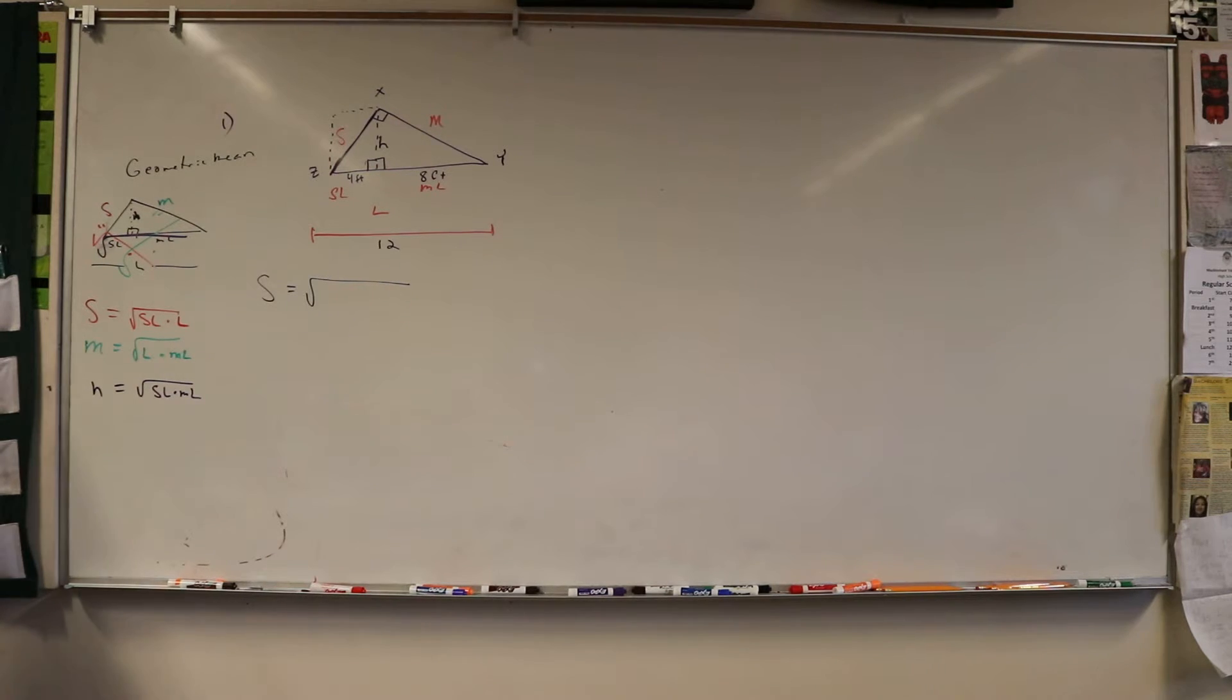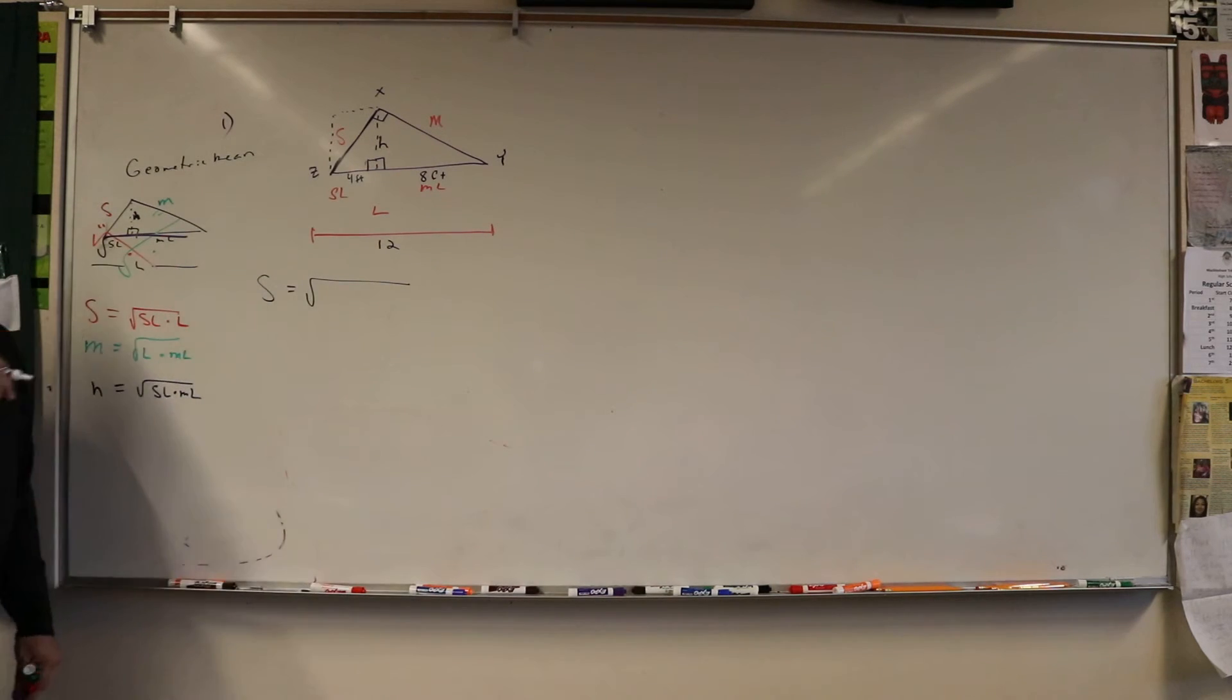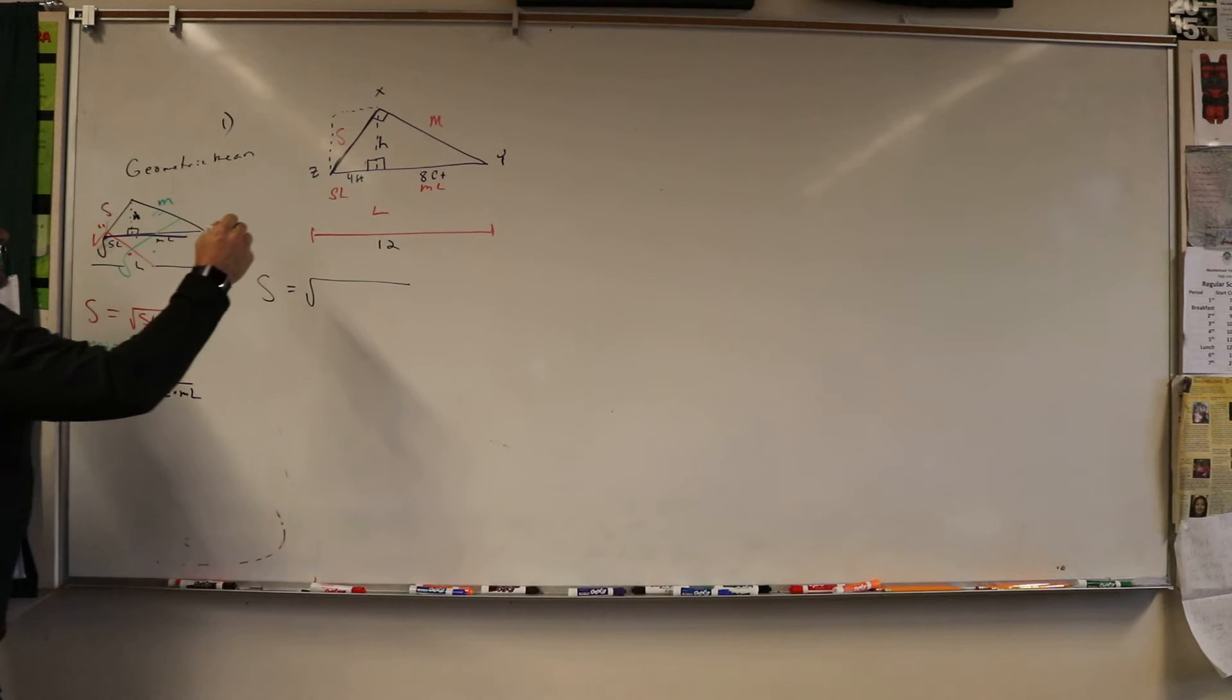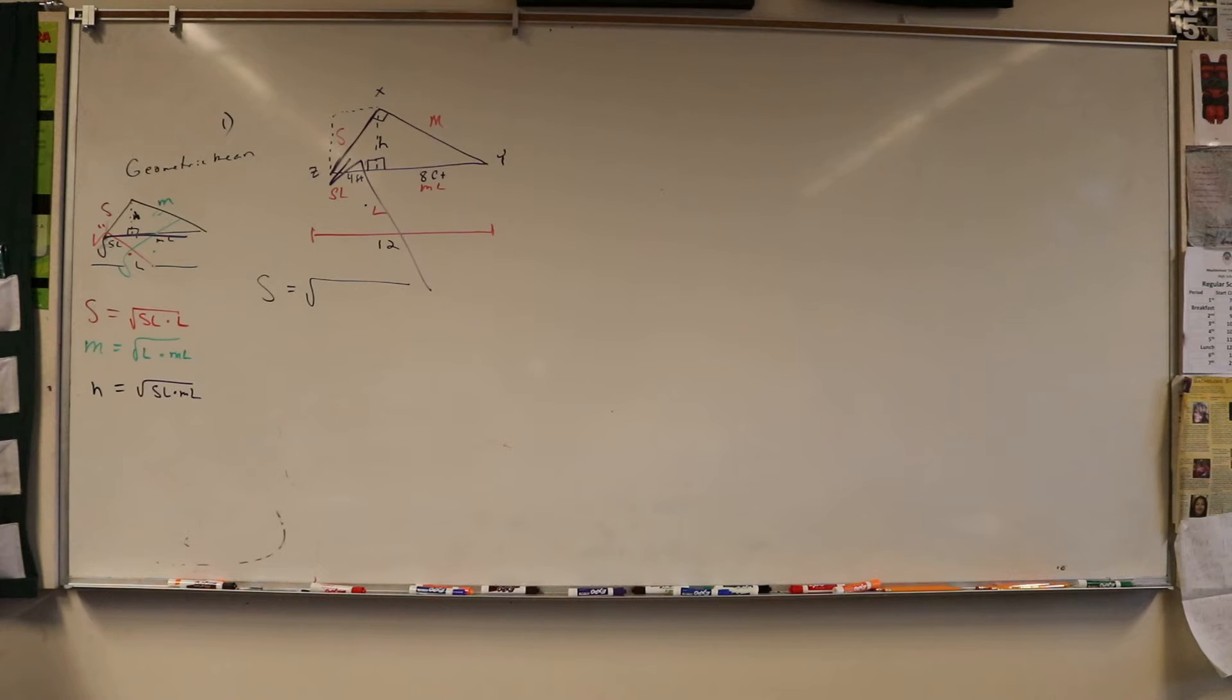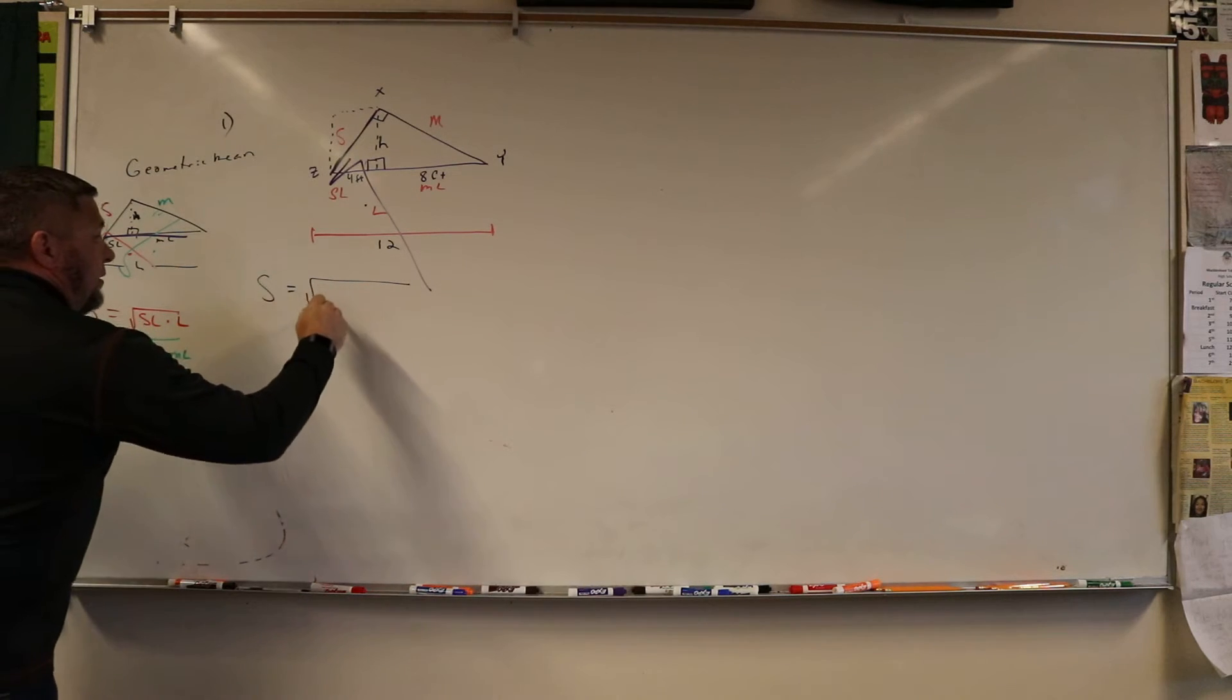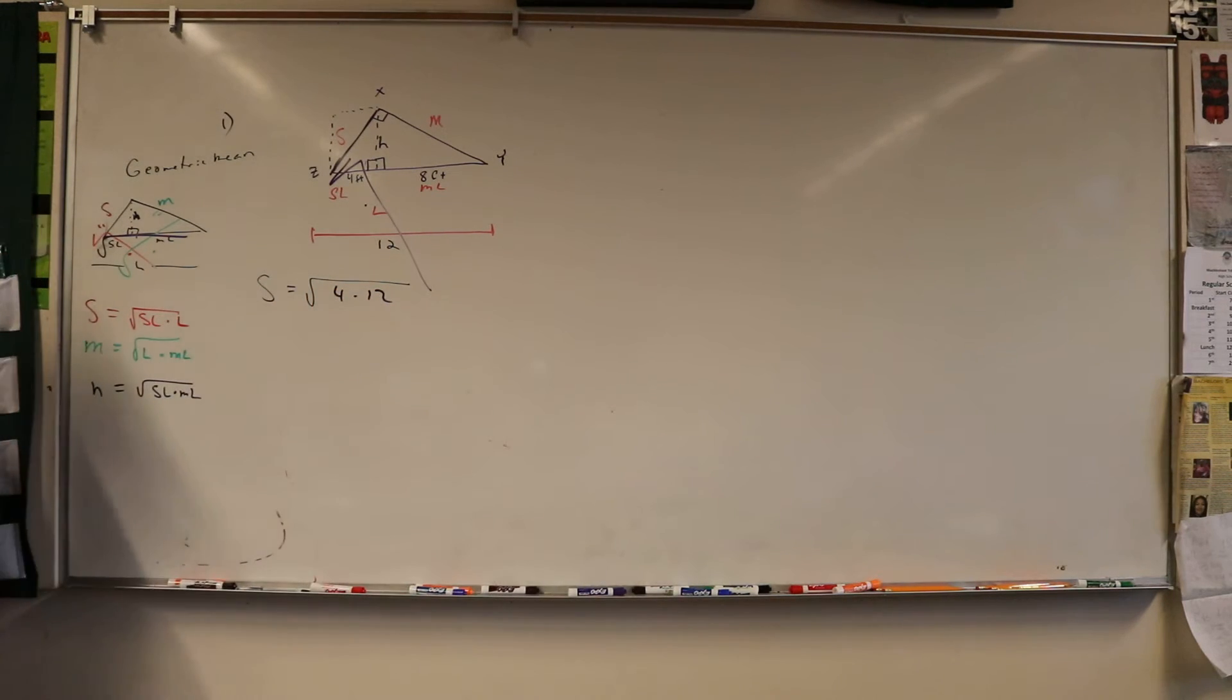We just got to know what they're asking us. They're asking us for S, so that's the square root of these two multiplied, so it's going to be 4 times 12. What's 4 times 12? 48, there you go.